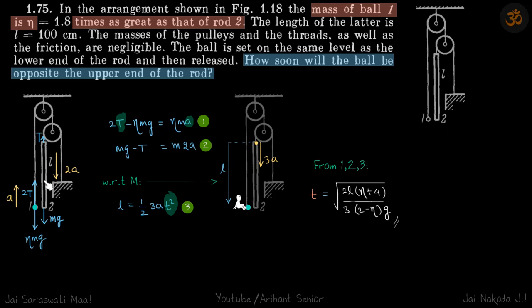Let's assume the tensions. Here, let's assume it's T just above the rod. So T and T becomes 2T. On the ball, the tension is 2T.